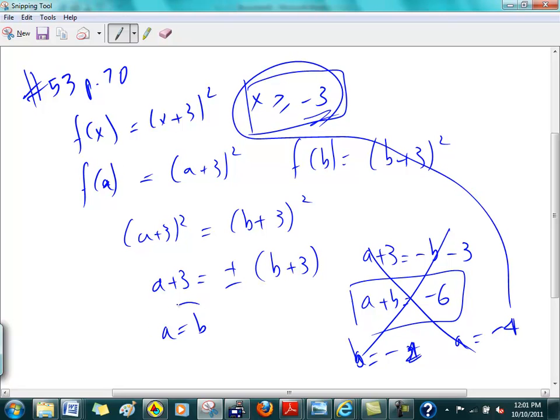There's only one answer. There's only one answer. So, if there's only one answer, it becomes 1 to 1. Okay? And then they tell you to verify your answer graphically. So, let's go do that. Okay? Let's go do that.